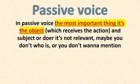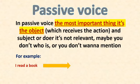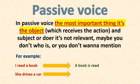Now we have an example. In active voice, in normal tense: 'I read a book.' Now we're going to change the same sentence into passive voice: 'A book is read.' Now another example — 'She drives a car.' In passive voice: 'A car is driving.' Now pay attention — in passive voice it's not important to say the subject or doer.